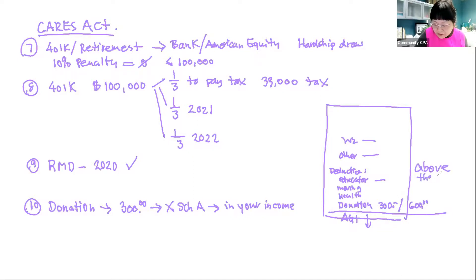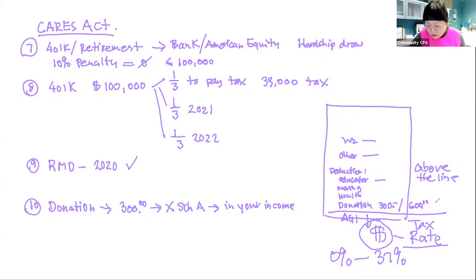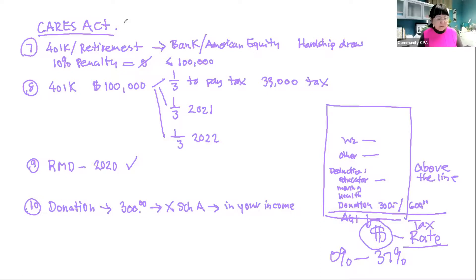The tax rates go from 0% to 37%, and your AGI is used to determine your rate. So that $600 above-the-line donation is beneficial because it can lower your effective tax bracket. That wraps up the personal side of CARES Act free money. Now let's go to the business side — there are about three big items there.